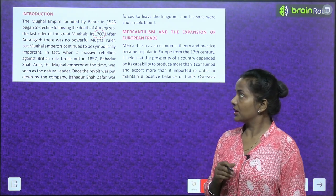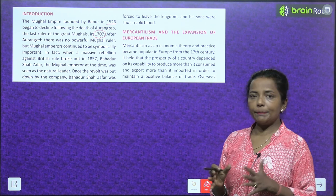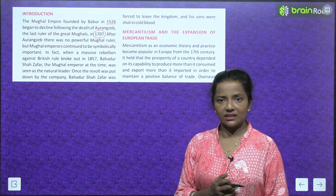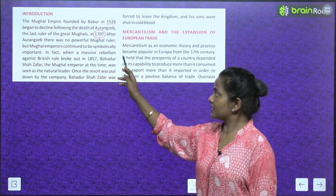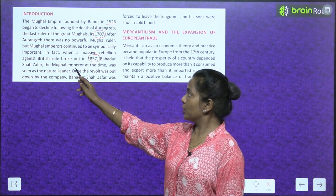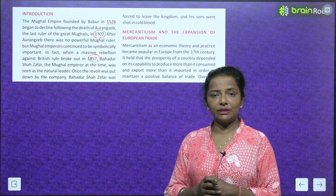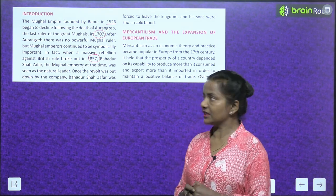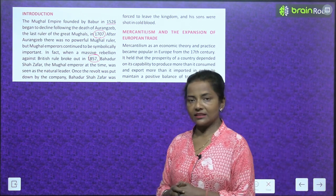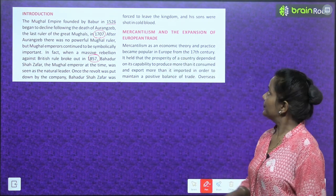After Aurangzeb there was no powerful Mughal ruler, but Mughal emperors continued to be symbolically important. In fact, when a massive rebellion against British rule broke out in 1857, Bahadur Shah Zafar, the Mughal Emperor at the time, was seen as the natural leader. Once the revolt was put down by the company, Bahadur Shah Zafar was forced to leave the kingdom and his sons were shot in cold blood.